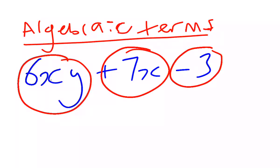You'll notice that the sign that belongs to the term is the sign that's in front of it. 7x is positive, and over here, we have negative 3. If there's no sign in front of the first term, of course, that would mean it was positive.